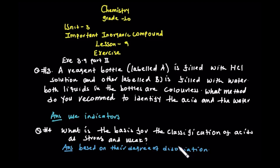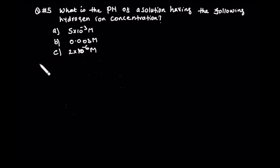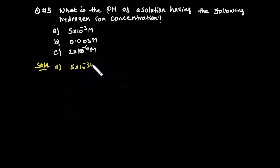We will dissociate. Let's come to question number five. Question number five: what is the pH of the solution having the following hydrogen ion concentration? A: 5 times 10 to the power of minus 3 mol. B: 0.003 mol. C. Now let's come to the solution. A: 5 times 10 to the power of minus 3 mol.